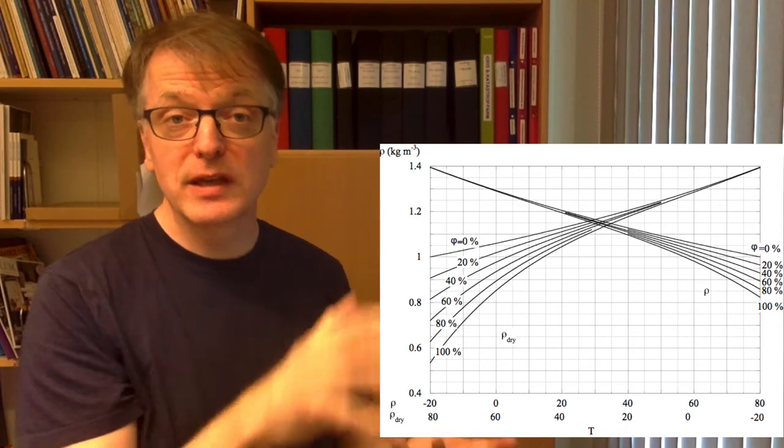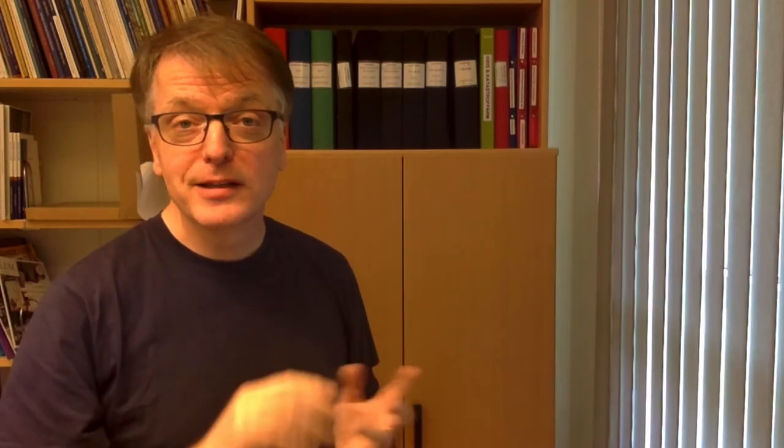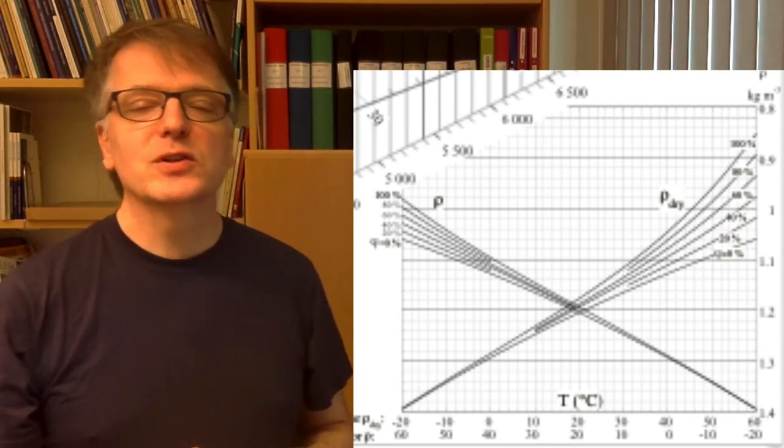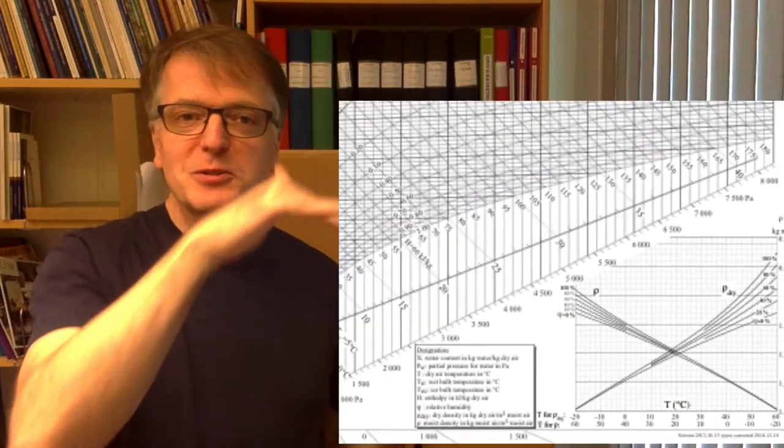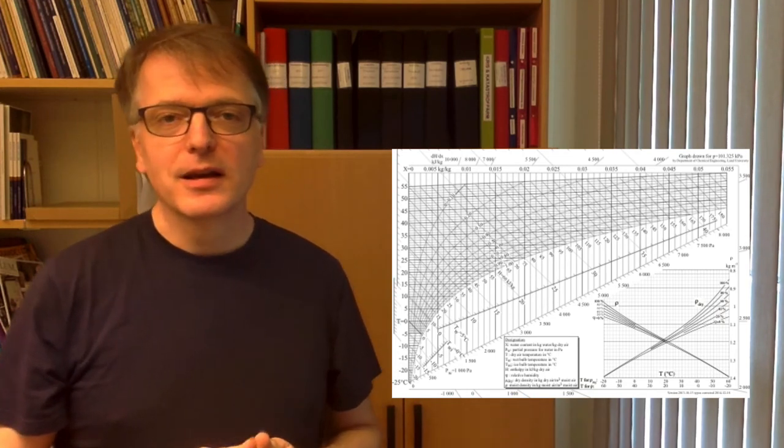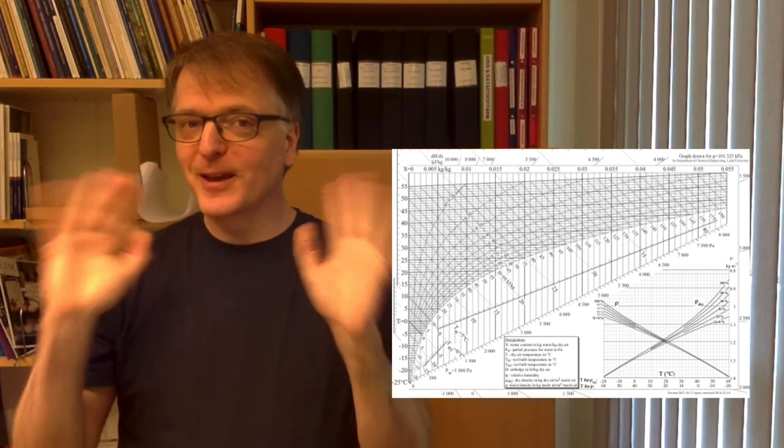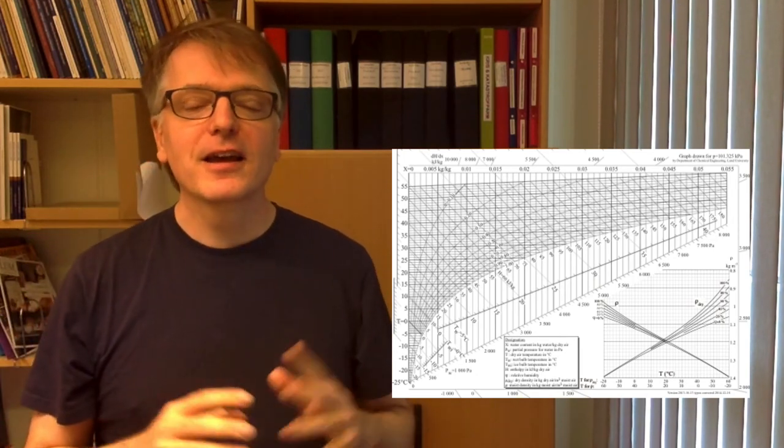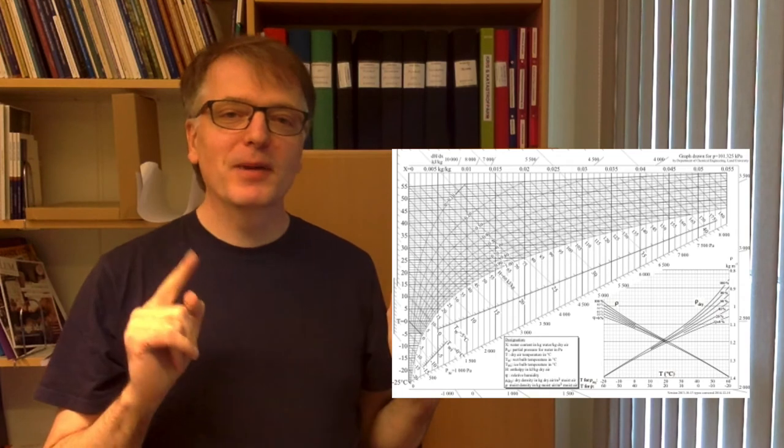But if it's drawn together with the Mollier diagram, it's actually often flipped the other way around like this so that it fits nicely in the small space that's left on the paper.